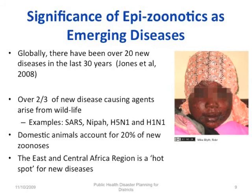What is the significance of epizoonotics as emerging diseases, especially in Eastern Africa? Globally, there have been over 20 new diseases in the last 30 years. Over two-thirds of new disease-causing agents arise from wildlife, with examples including SARS, Nipah, H5N1, and H1N1. Domestic animals account for 20% of new zoonoses. The East and Central African region is a hotspot for new diseases.